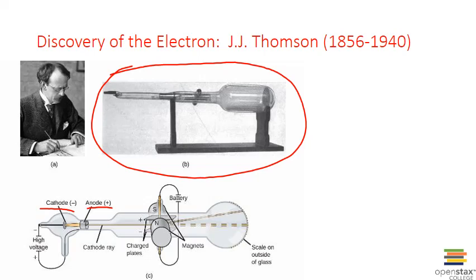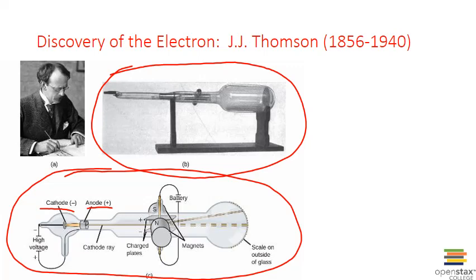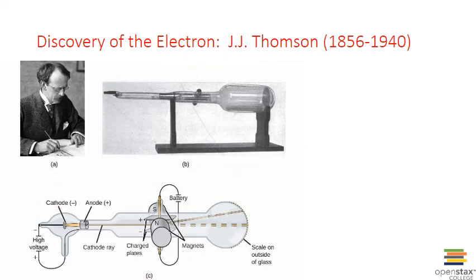In the late 1800s there was a lot of uncertainty about what these cathode rays actually were — were they light or were they a beam of particles? There was a lot of experimentation going on, and J.J. Thompson was applying electrical and magnetic fields to the cathode rays. In one of his setups he applied electrical fields using charged plates and magnets on either side of the tube to produce magnetic fields. What he discovered was that when cathode rays passed through these electrical and magnetic fields, their path would actually bend — they would be deflected.